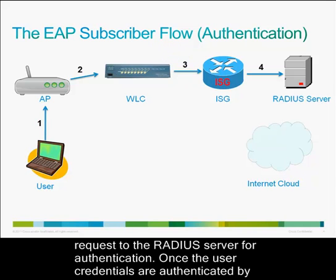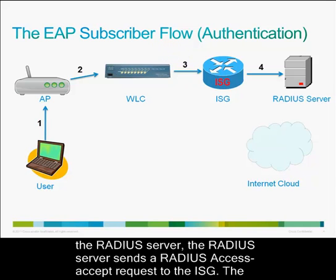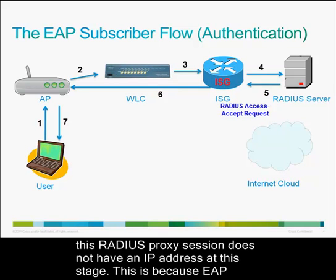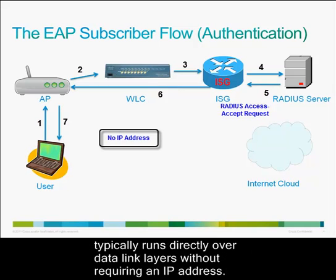Once the user credentials are authenticated by the RADIUS server, the RADIUS server sends a RADIUS access accept request to the ISG. The ISG forwards this request to the user via the access point. It is important to note that this RADIUS proxy session does not have an IP address at this stage, because EAP typically runs directly over data link layers without requiring an IP address.